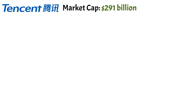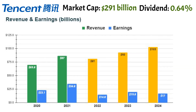Tencent has a market cap of around $291 billion at the current price and pays a dividend of around 0.64%. Revenue has decreased a little this year and is expected to rebound in 2023 and grow further, with the same trend for earnings. Analyst estimates may vary depending on Tencent, the Chinese government, and the economy. What I can say is that they'll find new ways to make more money in the future, because they have over 1 billion users and can easily provide new services to them.